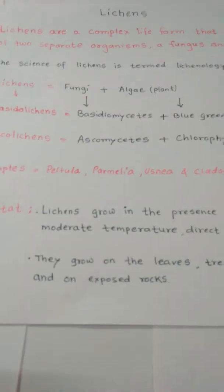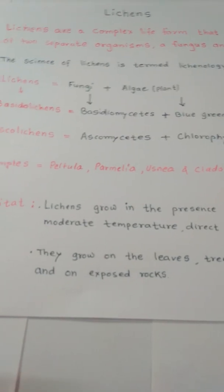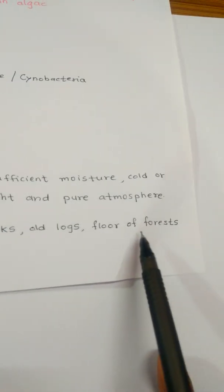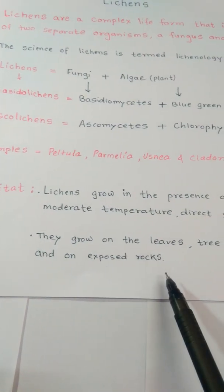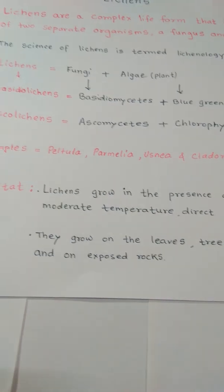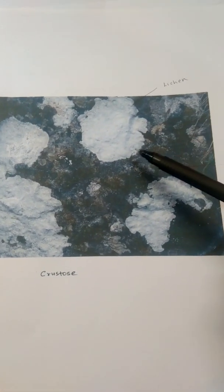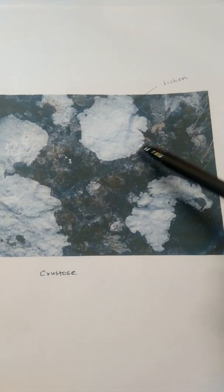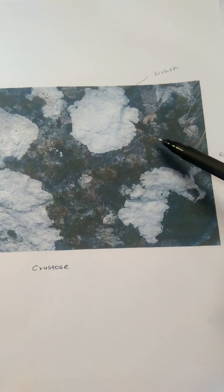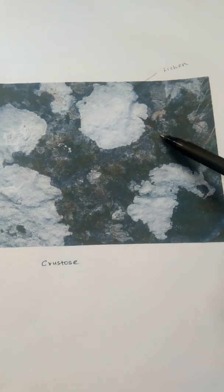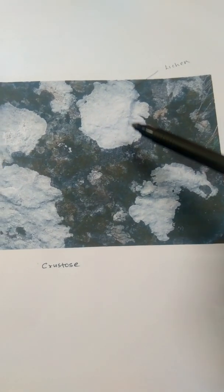When the above conditions are met, Lichens grow on leaves, tree trunks, old logs, the floor of forests, and on exposed rocks. Here you can see a photograph of Lichens growing on a rock. The rock is called the substratum, and on this substratum these Lichens grow.